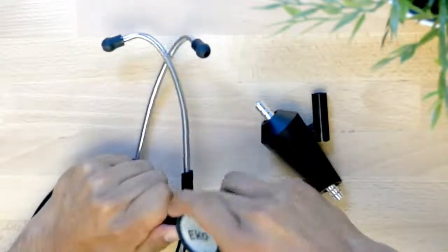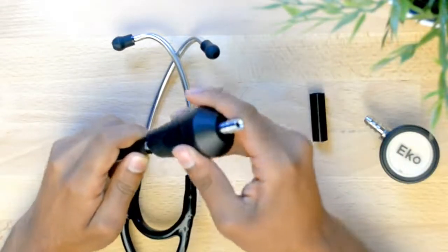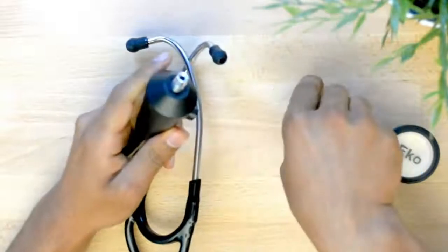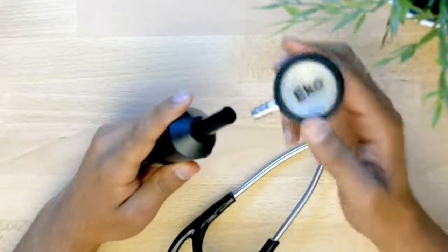First, remove the chest piece of the stethoscope. Insert the small end of the ECHO-Core hardware into the tubing of the stethoscope. Then attach the large adapter to the top of the ECHO-Core. Finally, insert the chest piece.